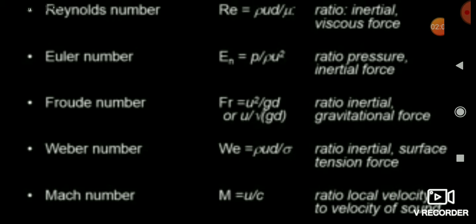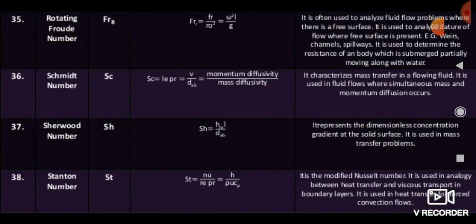Now let's see some important dimensionless numbers. The first one is Reynolds number. You should carefully see this slide — very simple questions have been asked on these topics. Reynolds number is the ratio of inertia force to viscous force. Froude number is related to inertial force. Also look at the Nusselt number, Stanton number, Strouhal number, and rotating Froude number — you should keep these in mind.